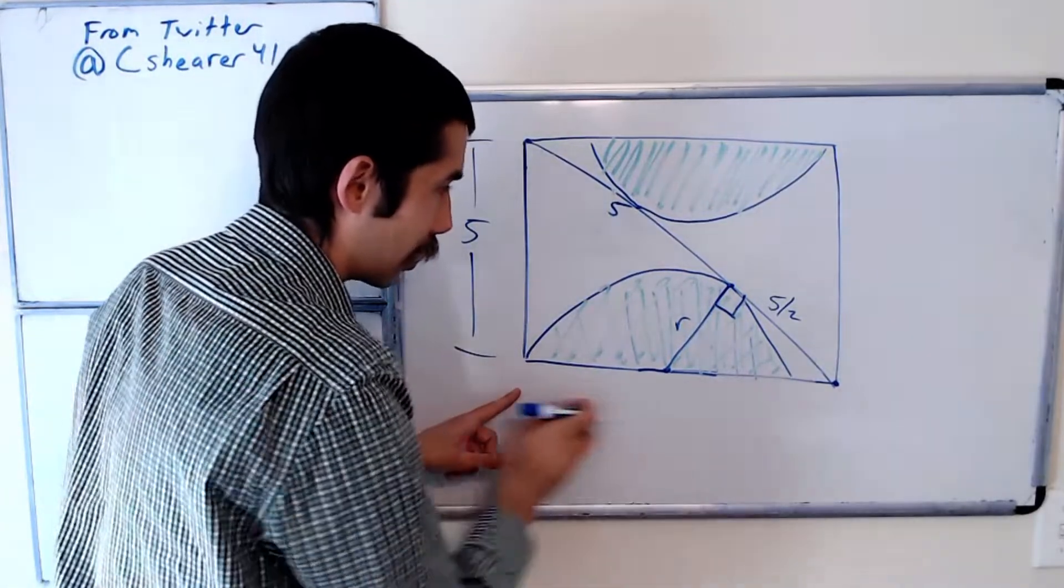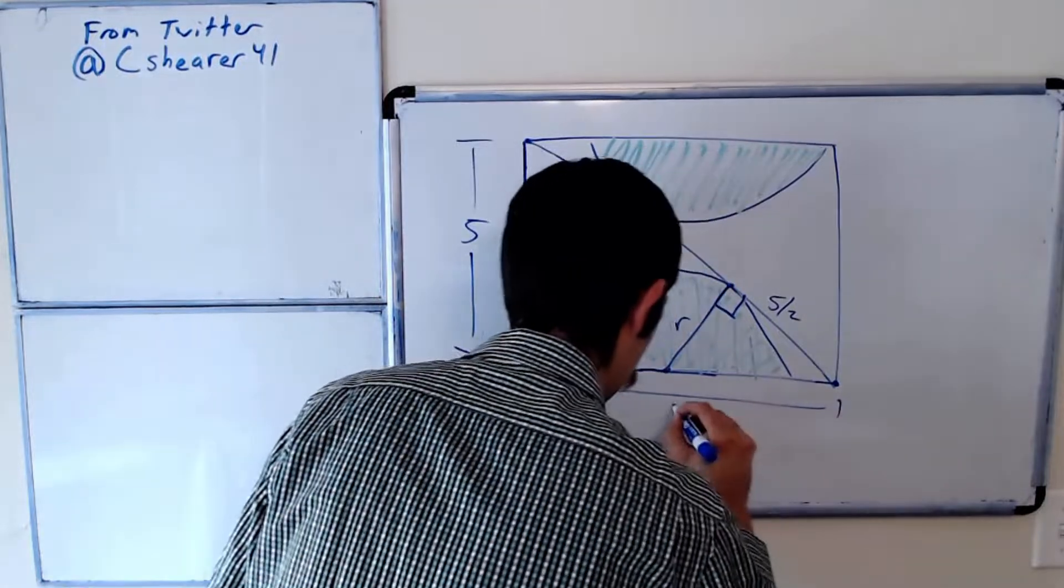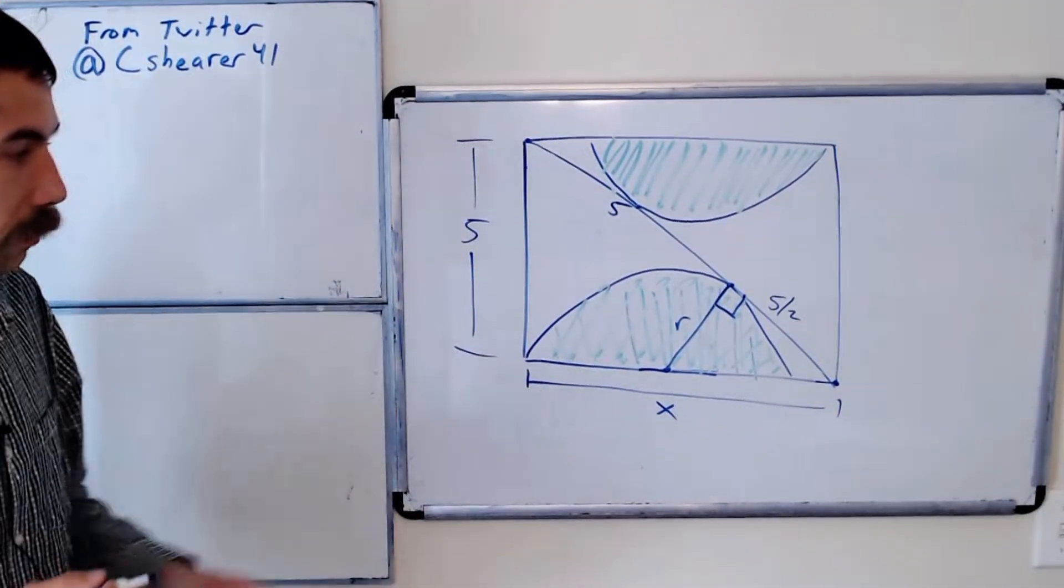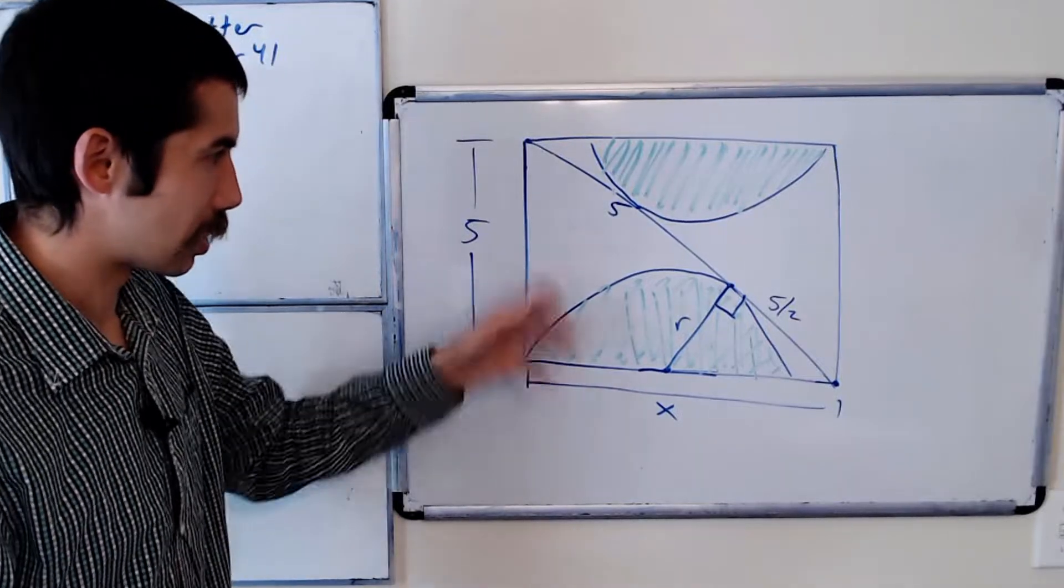This length here, we could find, right, this length, let's call x, we could find it using the Pythagorean theorem. We have a right triangle here because this is a rectangle.